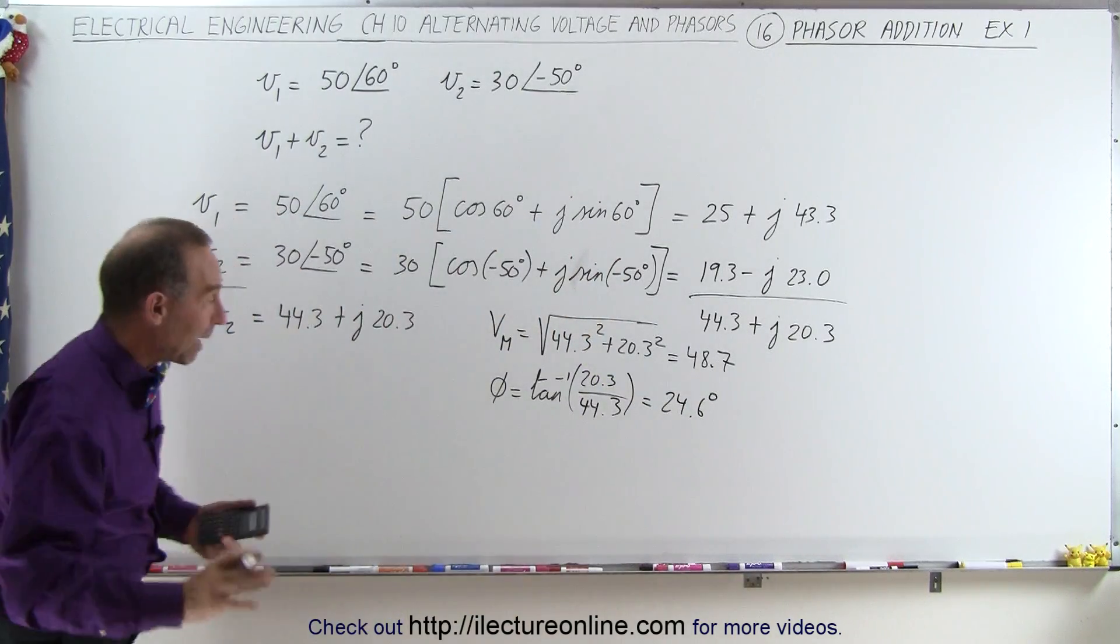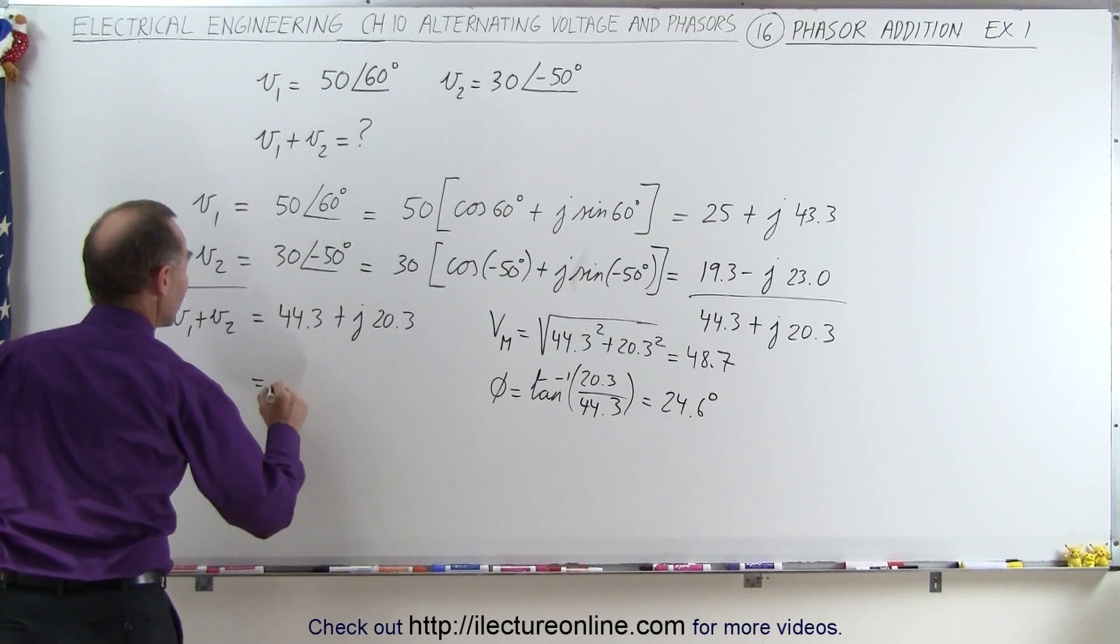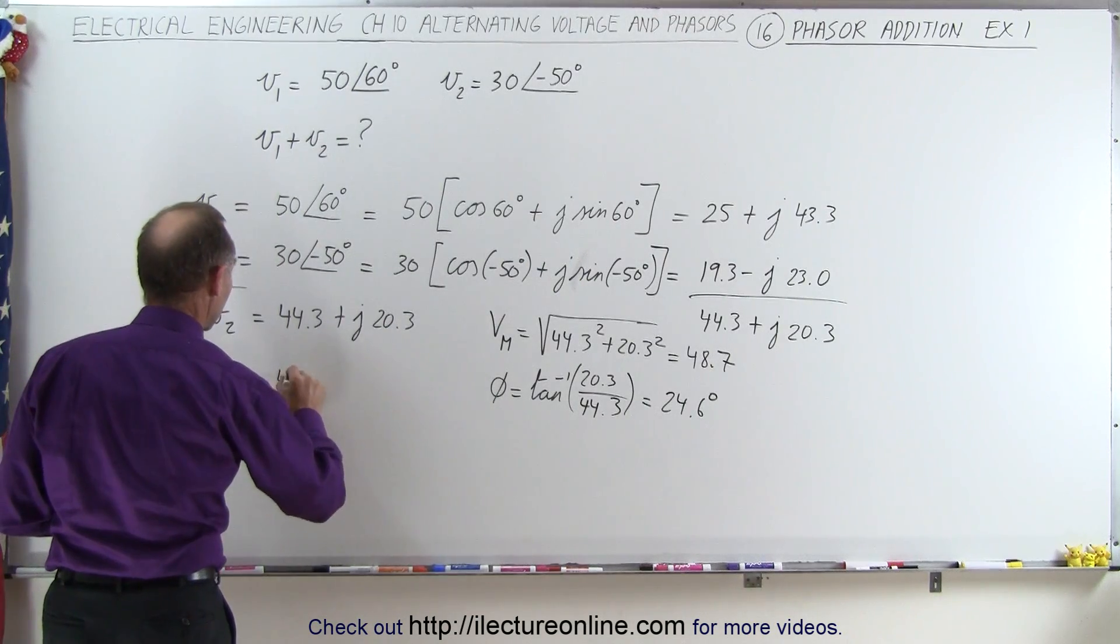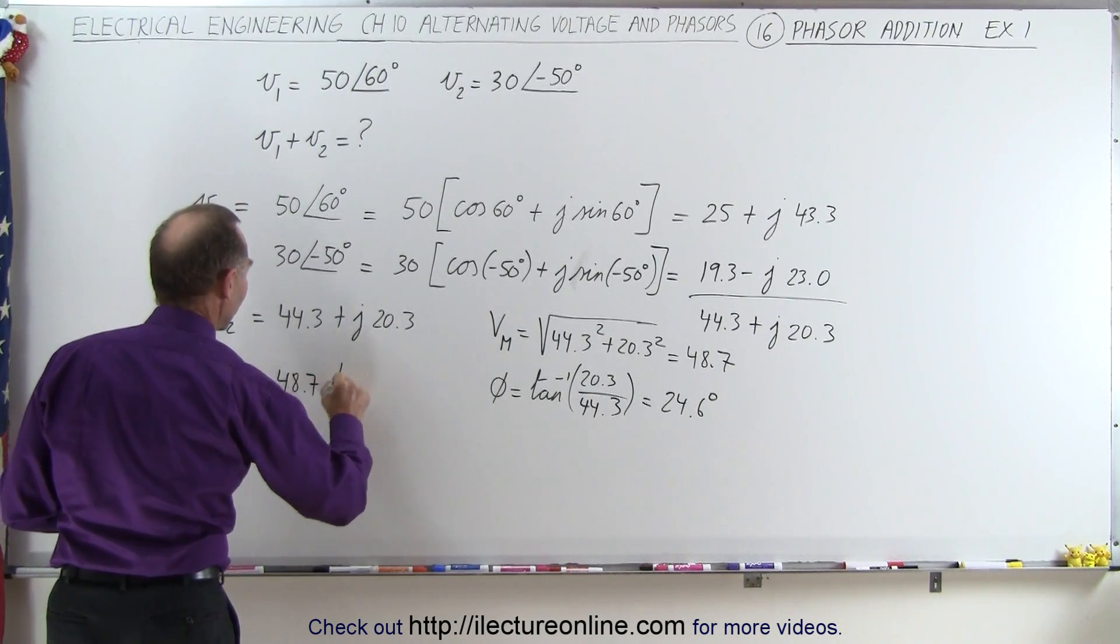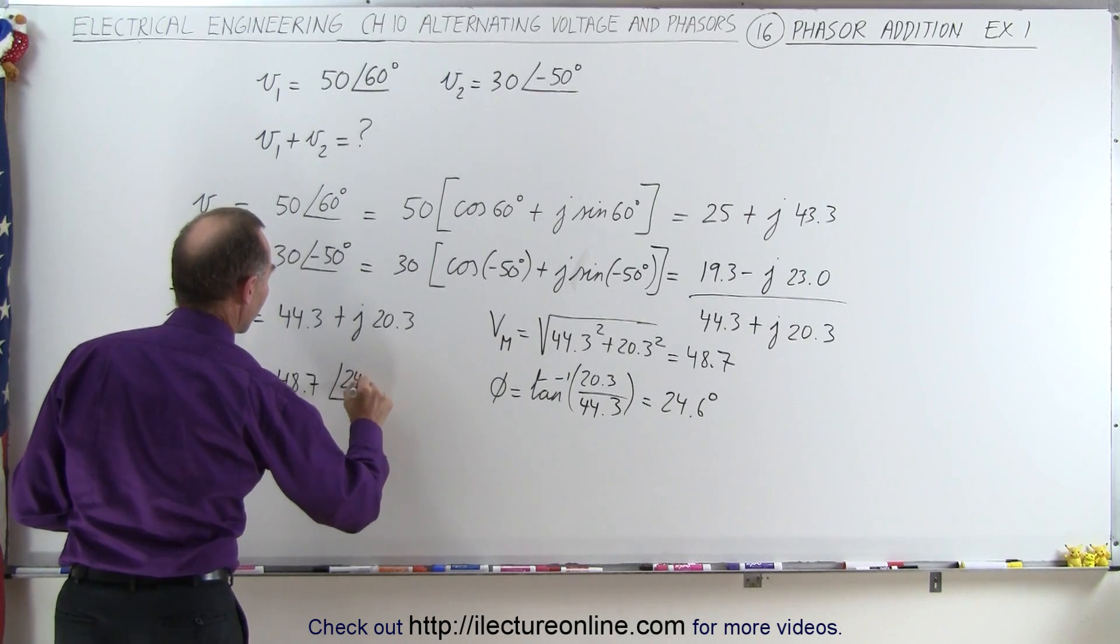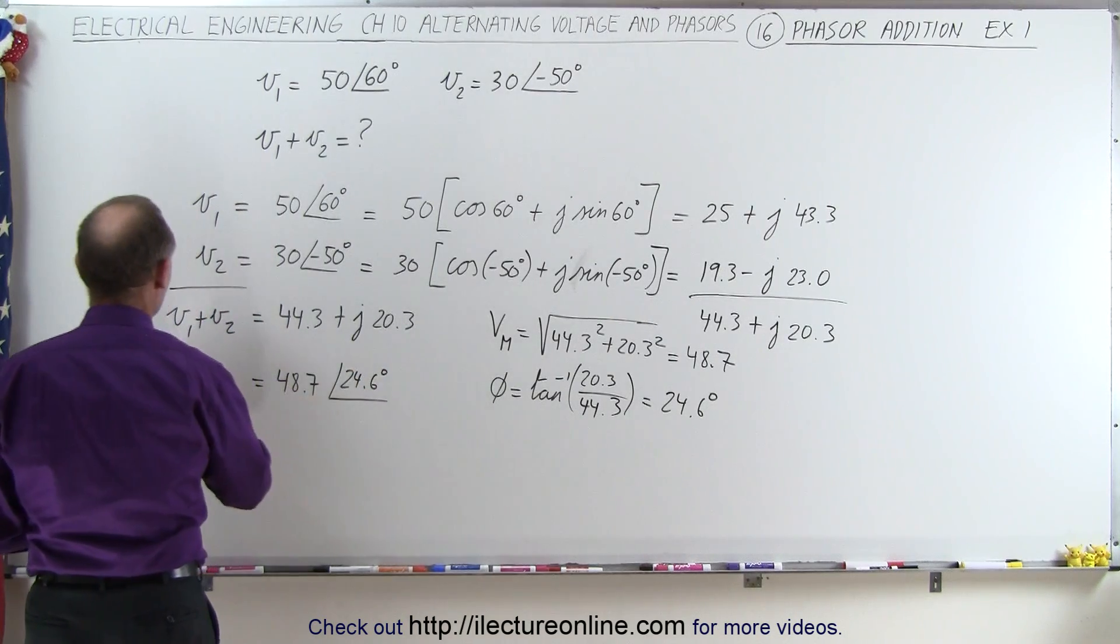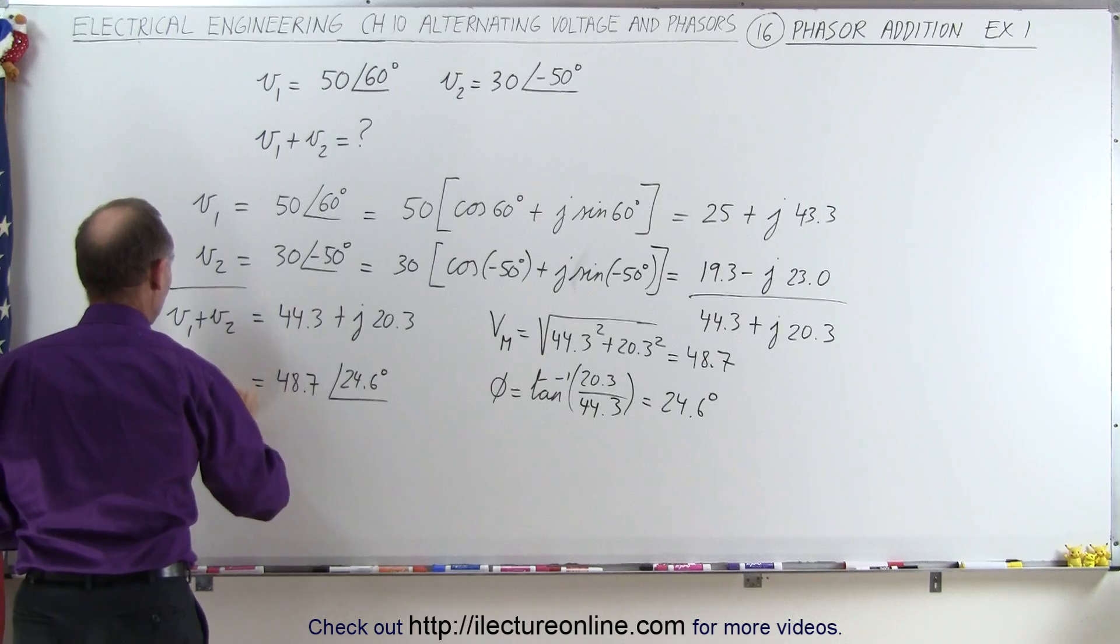So now finally we can write it back into the format. This would be equal to the magnitude of 48.7 and the phase angle of 24.6 degrees, and that would be the sum of the two voltages.